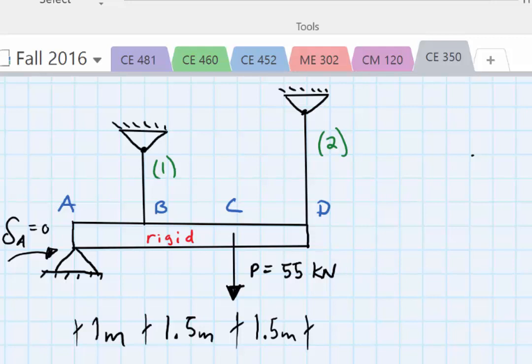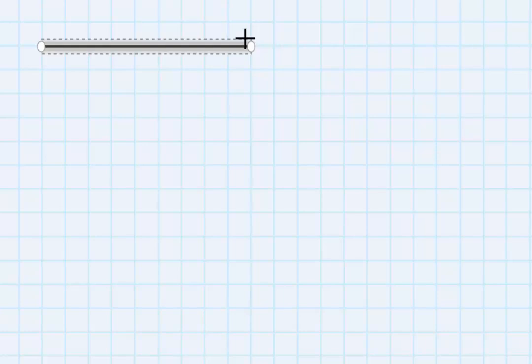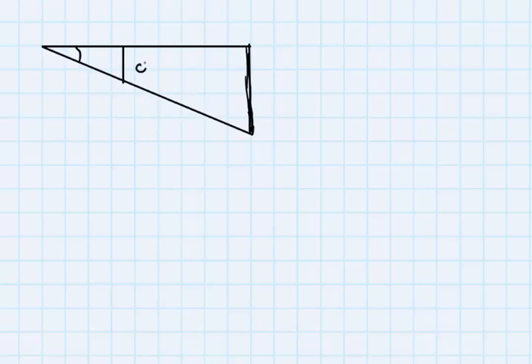So assuming that we can draw a couple of relationships here. This is my beam from A to D. There's going to be a deflection at B assuming the cable B deflects, and a deflection at D. And since there's no deflection at A, there will be a deflection here, so delta sub B.